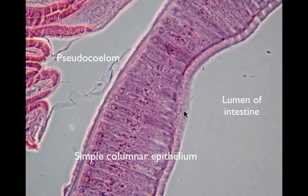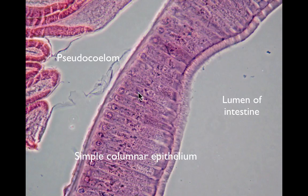Why is this cavity called a pseudocoelom? The body cavity of some organisms, such as yourself, is called simply a coelom. A coelom is defined as a cavity that is surrounded on all sides by tissues that have been derived from mesoderm, one of the three germ layers that form early in embryological development. A pseudocoelom, as seen in our Ascaris, is only partially surrounded by mesoderm-derived tissue. Although the muscle layer here is mesoderm-derived tissue, the simple columnar epithelium of the intestine is derived from endoderm, which is another germ layer. Biologists consider this difference significant enough to give this cavity a different designation. The type of body cavity, or lack of a body cavity, is used as one criterion when classifying animal phyla, as we will discuss in lecture.